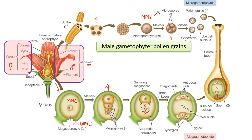Three of the four megaspores degenerate by apoptosis, or programmed cell death. The one at the chalazal end survives, and this surviving megaspore undergoes three rounds of mitosis — two, four, eight — forming an eight-celled embryo sac. The three cells at the chalazal end are called antipodals. The egg apparatus comprises a central egg cell with two synergids. The central cell contains two haploid polar nuclei, which later fuse to form the secondary nucleus. This is the structure of a mature embryo sac, or female gametophyte.